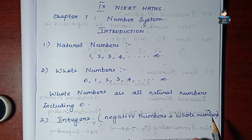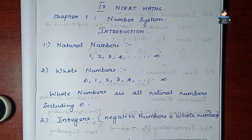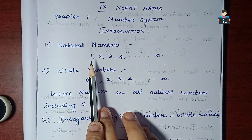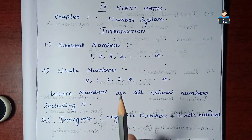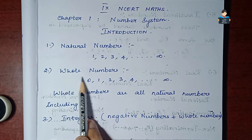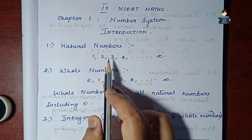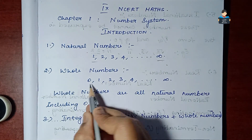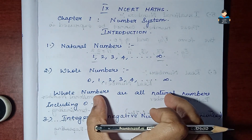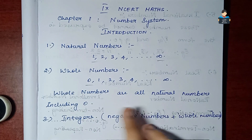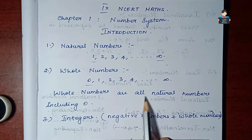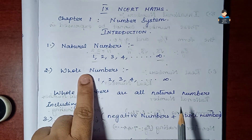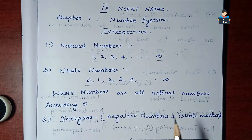Hello everyone, welcome to our channel. In this video we will learn NCERT Chapter 1: Number System. In the introduction video, we will cover natural numbers. Natural numbers go from 1 to infinity. Whole numbers are all natural numbers including zero. So zero is part of whole numbers but not natural numbers.